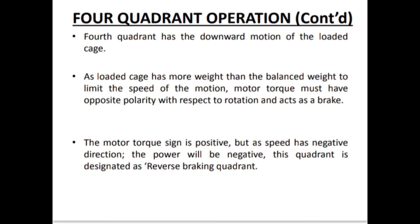So to summarize: first quadrant is forward motoring, second is forward braking, third is reverse motoring. The fourth quadrant has the downward motion of the loaded cage. As the loaded cage has more weight than the balance weight, to limit the speed of motion the motor torque must have opposite polarity with respect to rotation and acts as a brake. The motor torque sign is positive, but as speed has a negative direction the power is negative. This quadrant is designated as the reverse braking quadrant — so forward braking is second quadrant and reverse braking is the fourth quadrant. These are very important for MCQ exams.